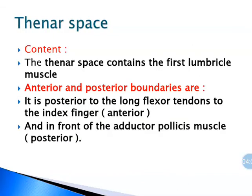The thenar space is very narrow and has only one content — it contains the first lumbrical. This space has anterior and posterior boundaries. The thenar space is posterior to the long flexor tendons of the index finger, which forms the anterior boundary. The space is in front of the adductor pollicis muscle, which forms the posterior boundary.